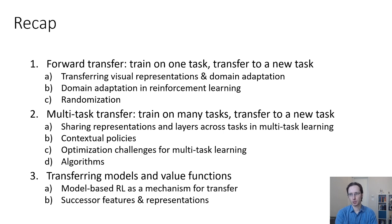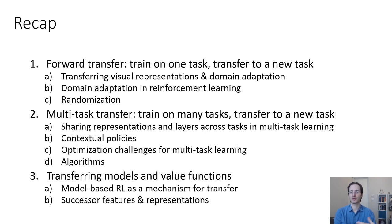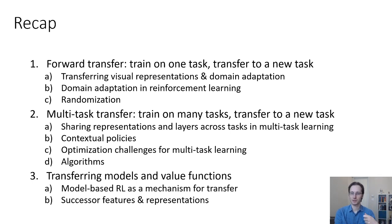To recap: in this lecture, we talked about forward transfer — training on one task and transferring to a new task — including transferring visual representations and domain adaptation in RL, and how randomization can facilitate forward transfer. We talked about multitask transfer, sharing representations across tasks, contextual policies, optimization challenges like gradient interference and the winner-take-all problem, and algorithms to address them. Finally, we covered transfer in the special setting where dynamics stay the same but the reward changes, including model-based RL transfer and successor features and representations.